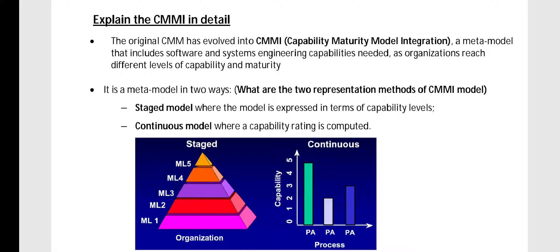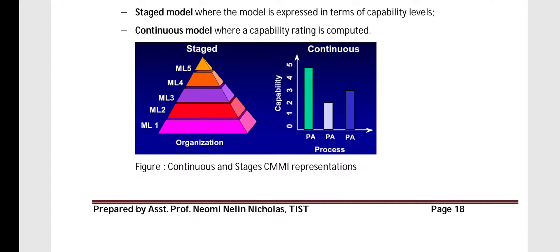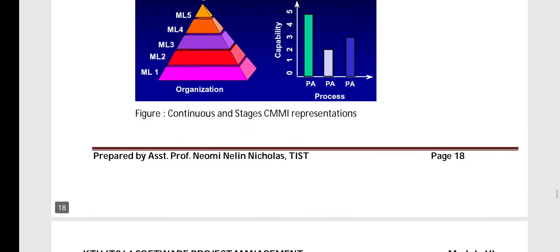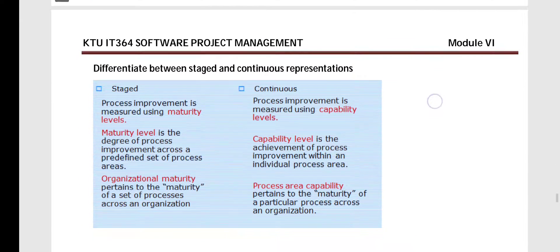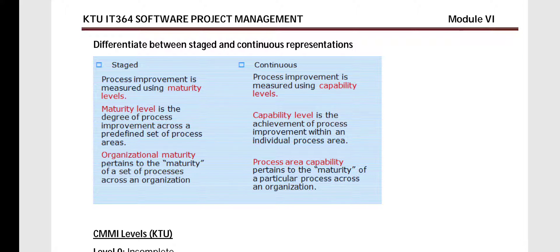CMMI is a meta model, meaning it has two representations: a stage model and a continuous model. In the stage model it is like a pyramid having MLs — maturity levels — from 1 through 5 on the y-axis, and the organization on the x-axis. In the continuous model, the y-axis has capability levels and the x-axis has process areas (PA). The key difference is that stage uses maturity levels for process improvement while continuous uses capability levels.